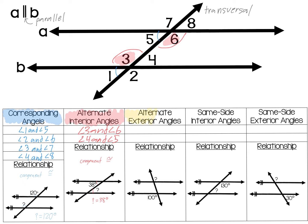Next, let's look at alternate exterior angles. Alternate means on opposite sides of the transversal. Exterior means on the outside of the parallel lines. So in this case we might have angle 1 and angle 8, or angle 2 and angle 7. Notice how they are on opposite sides of the transversal and they are exterior, or outside, of the parallel lines.